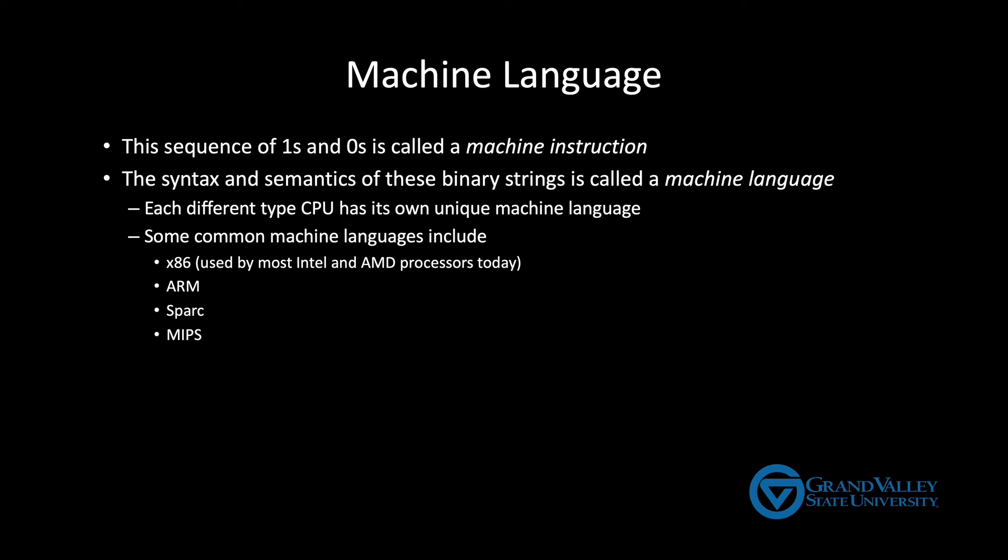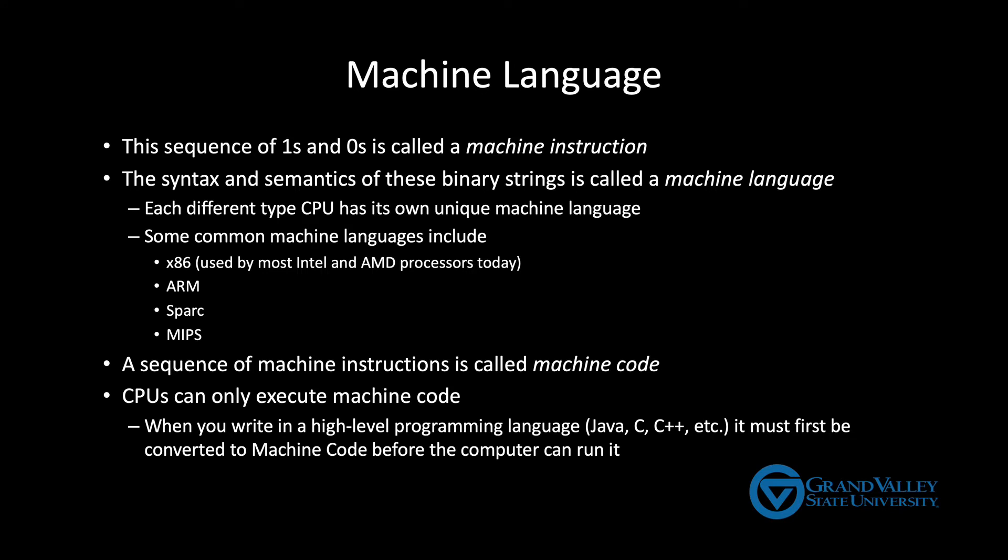A sequence of machine instructions is called machine code. A CPU can only execute machine code. When you write in a high-level programming language like Java, C, C++, and so on, it must first be converted to machine code before the computer can use it. This is what the compiler does. It turns high-level code into machine code.